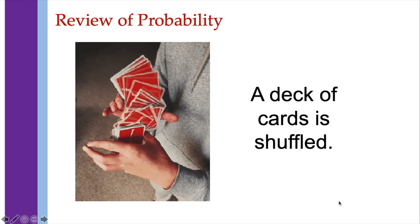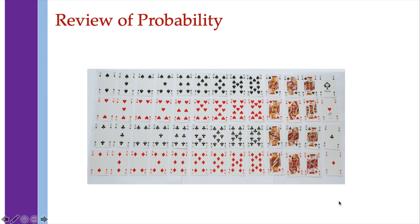When a deck of cards is shuffled, we know that a deck of cards is composed of 13 different figures: Ace, 2, 3, 4, up to Jack, Queen, and King, at 4 different suits.